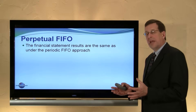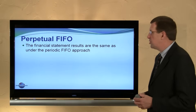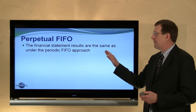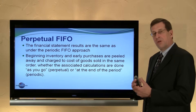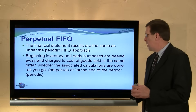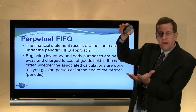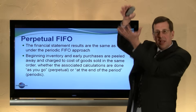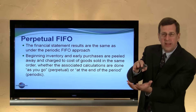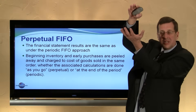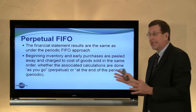These amounts may look familiar. The financial statement results under the perpetual FIFO method are the same as those from the previous module's periodic FIFO method. Beginning inventory and earlier purchases are peeled away and charged to cost of goods sold in the same order, whether the calculations are done as you go or at the end of the period. Whether you track gradually in perpetual fashion or factor in all purchases and subtract all sales at period end, you arrive at the same ending inventory result. Perpetual FIFO and periodic FIFO give identical results.